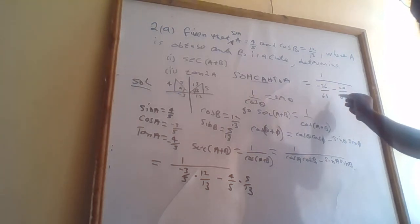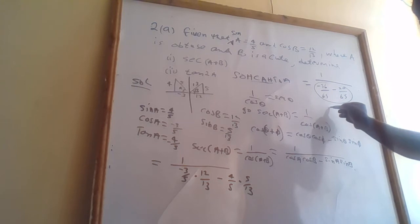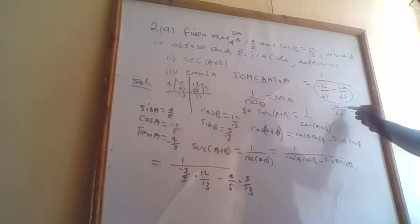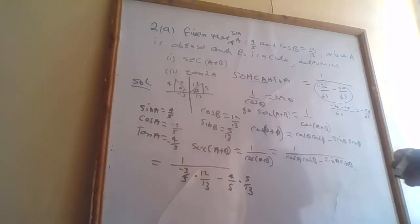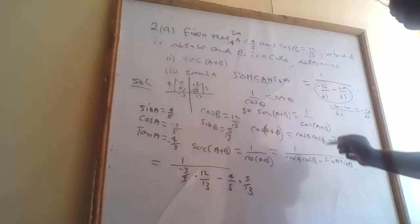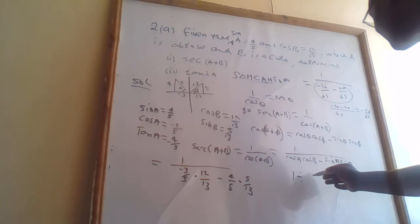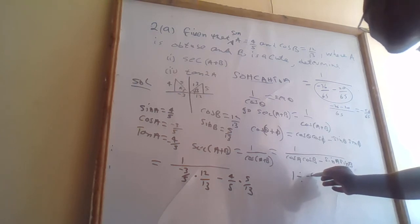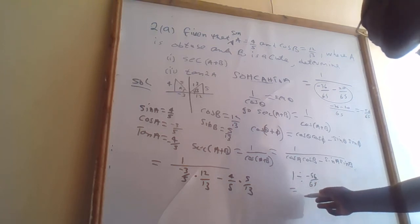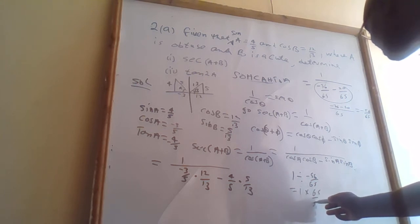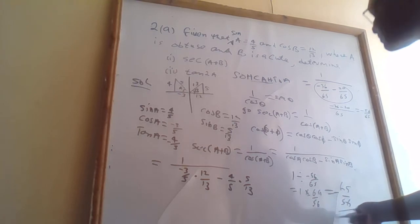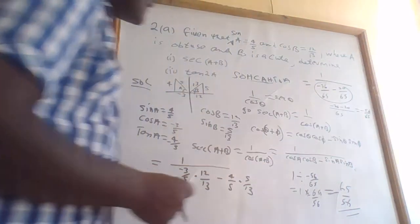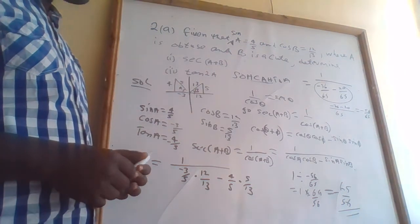The denominator simplifies with common denominator 65: negative 36 minus 20 equals negative 56 over 65. Therefore sec(A + B) = 1 divided by (−56/65), which equals 1 times 65 over negative 56. The answer is negative 65 over 56.